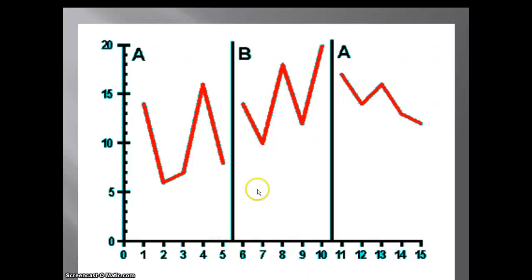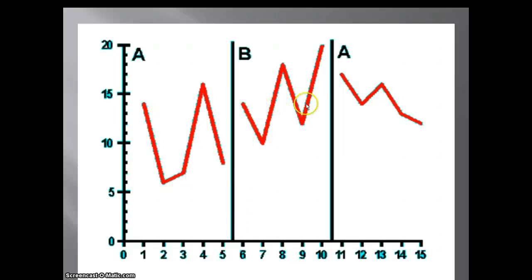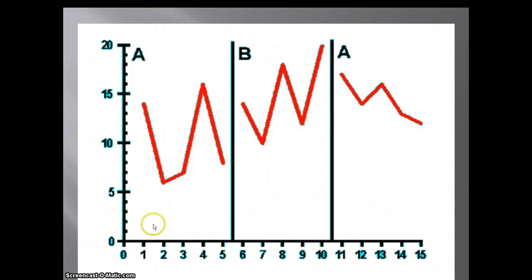Here's an example of an ABA design. A client was not exhibiting appropriate empathy reactions, and the goal was to increase those. We establish a baseline over five sessions — the person is averaging 10. We provide treatment in the B phase, and the average goes up to 14.8. We then remove the treatment and see it begin to go back down to about 10. This shows we can change behavior because removing the intervention reverses it. It's also important for this person to have appropriate empathetic reactions, so we reintroduce the treatment to get those back up.